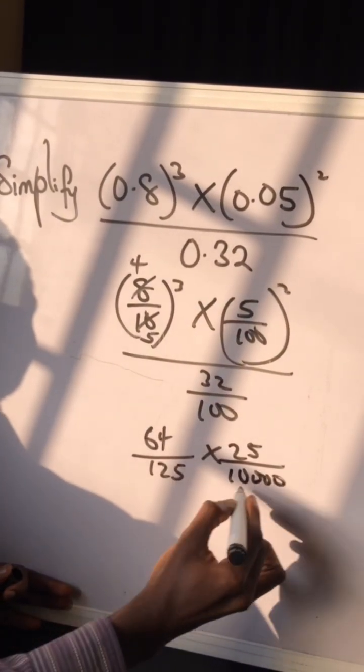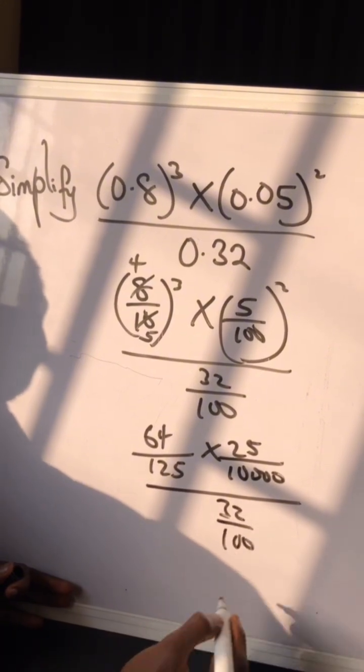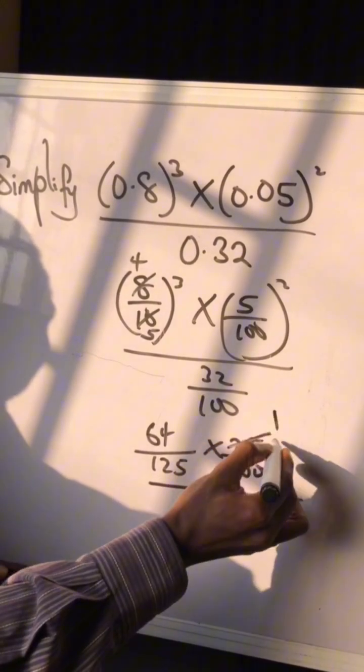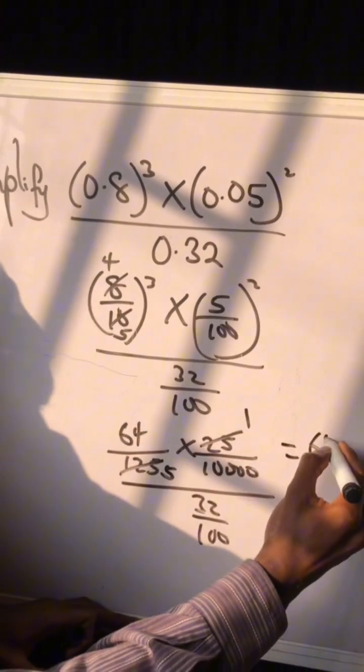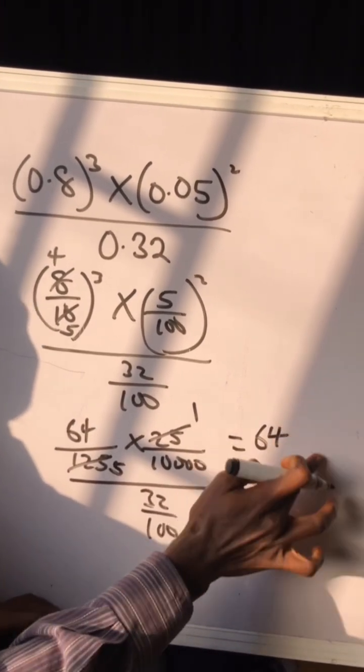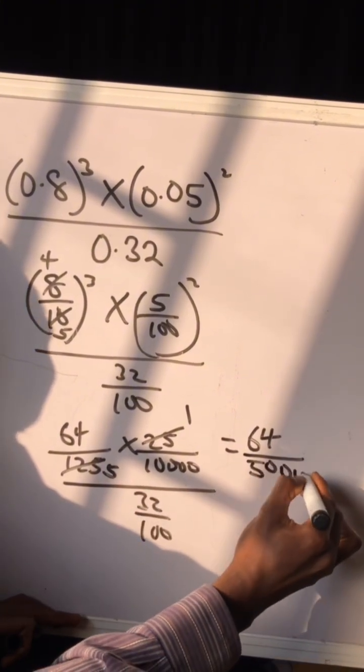So 25 to 1, 25 to 5. We got 64 times 1 which is 64, over 5 times 50,000. Then you turn this upside down. So 32 to 1, 32 to 2, so 2 times 1 is 2 over 500 times 1. When you divide this you get this.